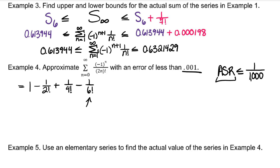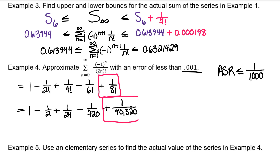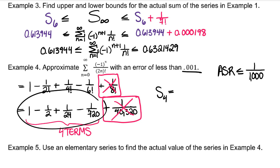What is 1 over 6 factorial? That's 1 over 720. Is 1 over 720 less than or equal to 1 over 1,000? No, it's not. So let's find the next term. The absolute value of 1 over 8 factorial is 1 over 40,320, which is definitely less than or equal to 1 over 1,000. That makes 1 over 8 factorial our first unused term. So how many terms did it take? It took us four terms. They're asking for the fourth partial sum, S sub 4. Simply combine your first four terms and you get 0.540277.